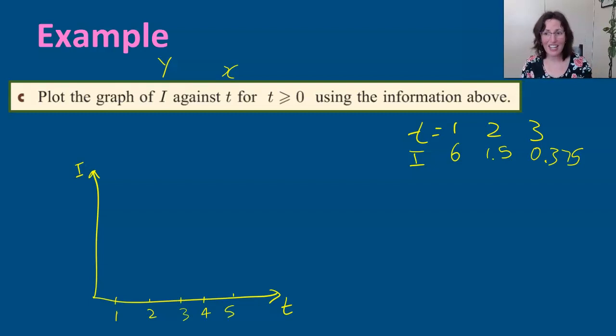Thinking of the scale, what's the highest value that we've got? Well, what was it when we started at t = 0? That's the other one that we need to put on. That was 24, wasn't it? So that's where we need to make sure we started. So maybe you might go up in multiples of 5—5, 10, 15, 20, 25—just giving you a rough idea of what this is going to look like.